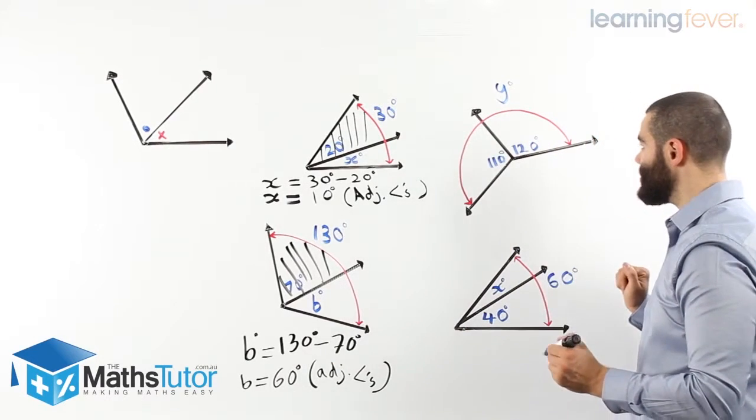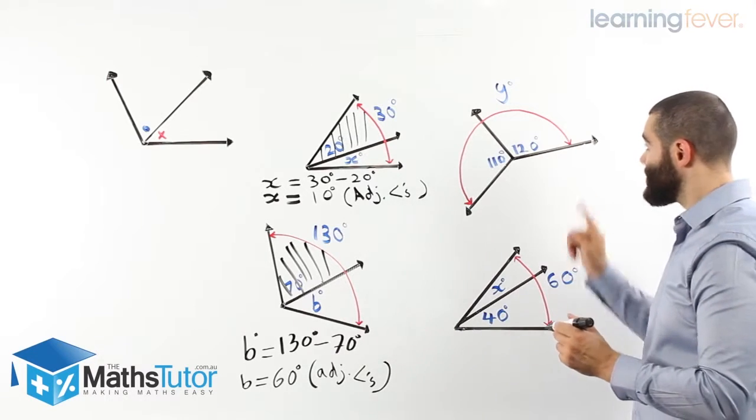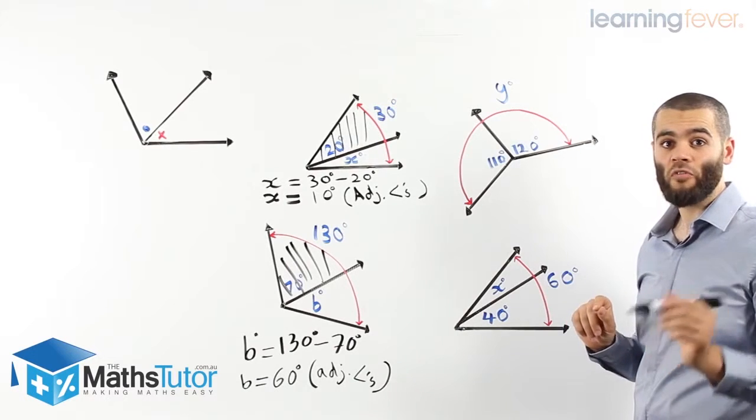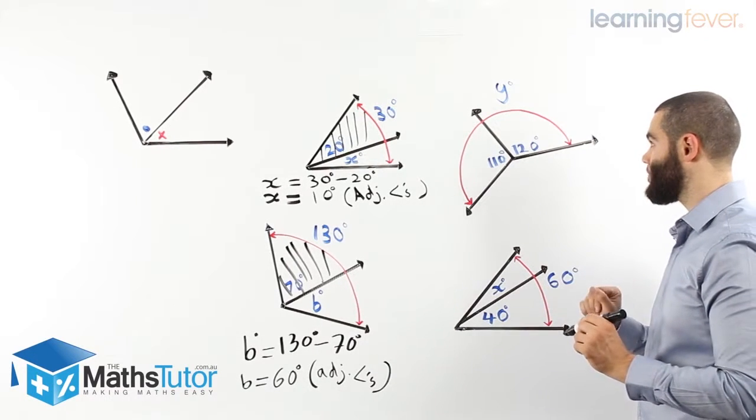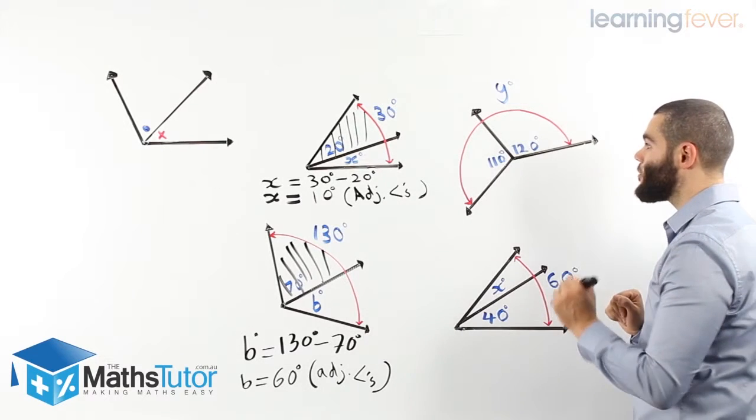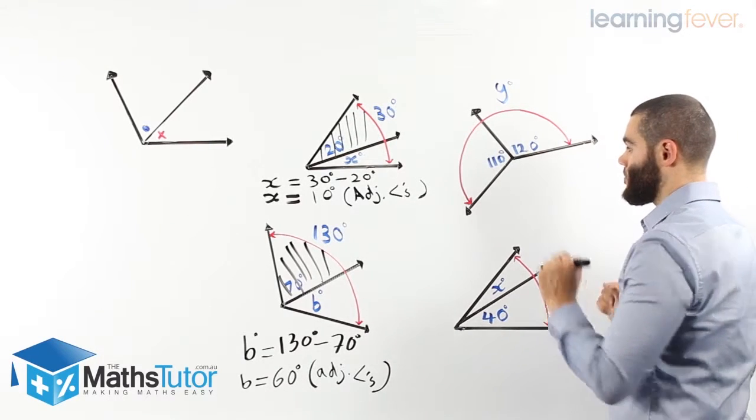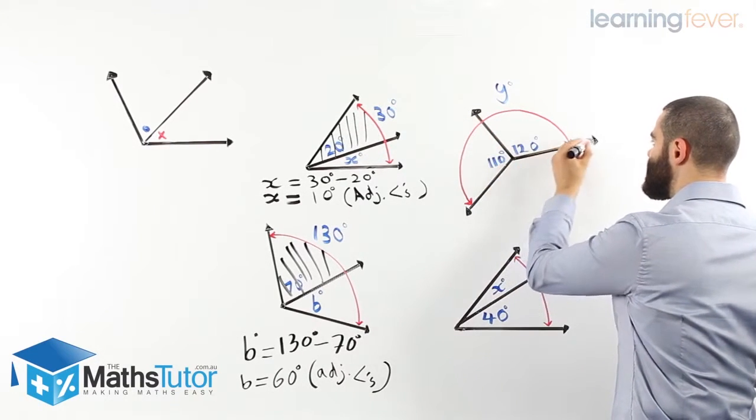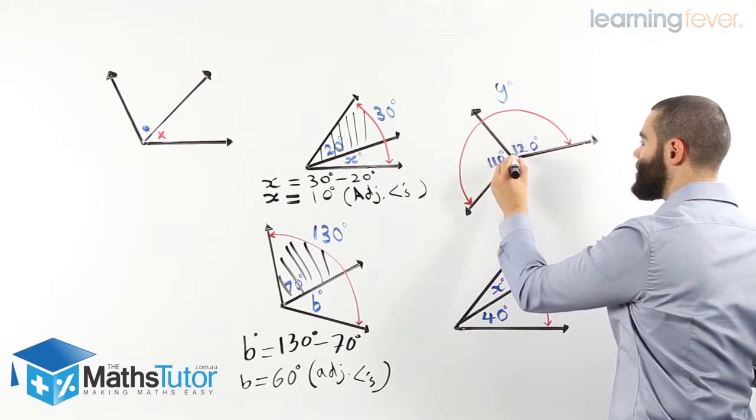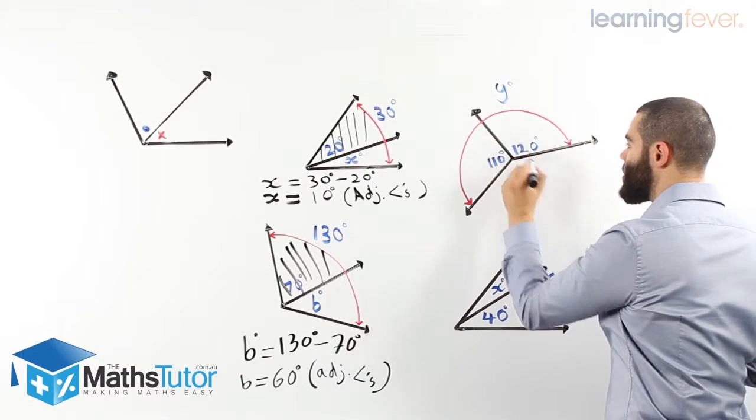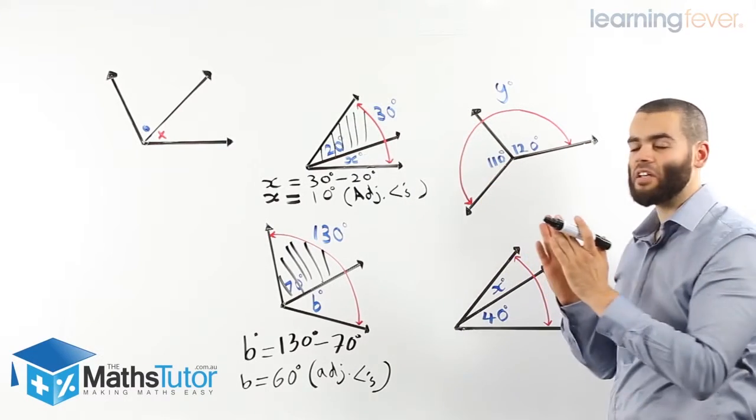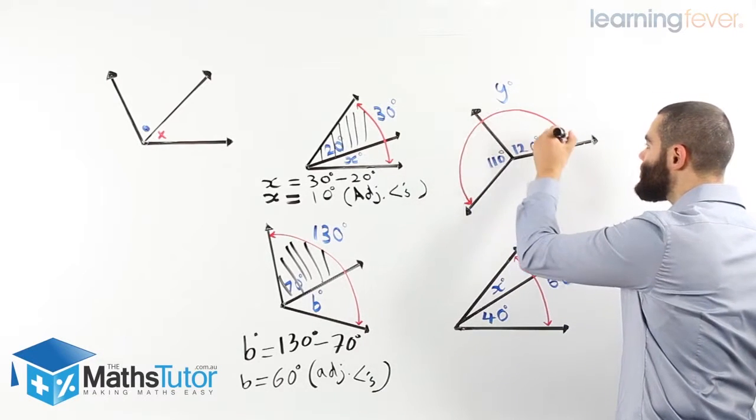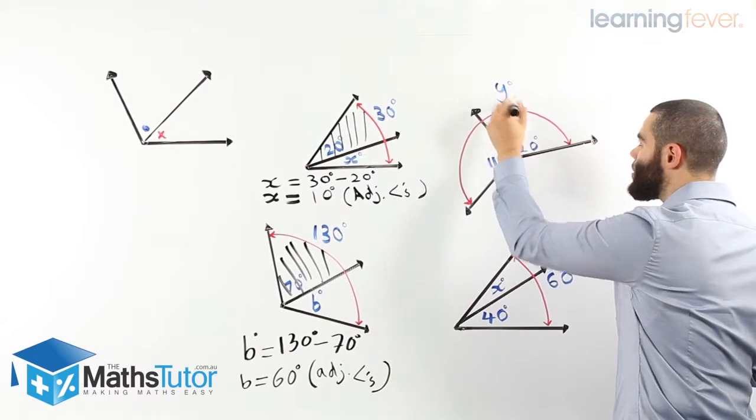Let's look at a third example. Hopefully now you're getting better and better at understanding this. Maybe you want to pause the video and see if you can do this one yourself and then check afterwards. We know that we have two angles. We have this angle here, is 110 degrees, and this angle here is 120 degrees. We know they are adjacent because they have a common vertex and they share a common arm. And we know that in total, they all both together make Y, which is the total of both together.